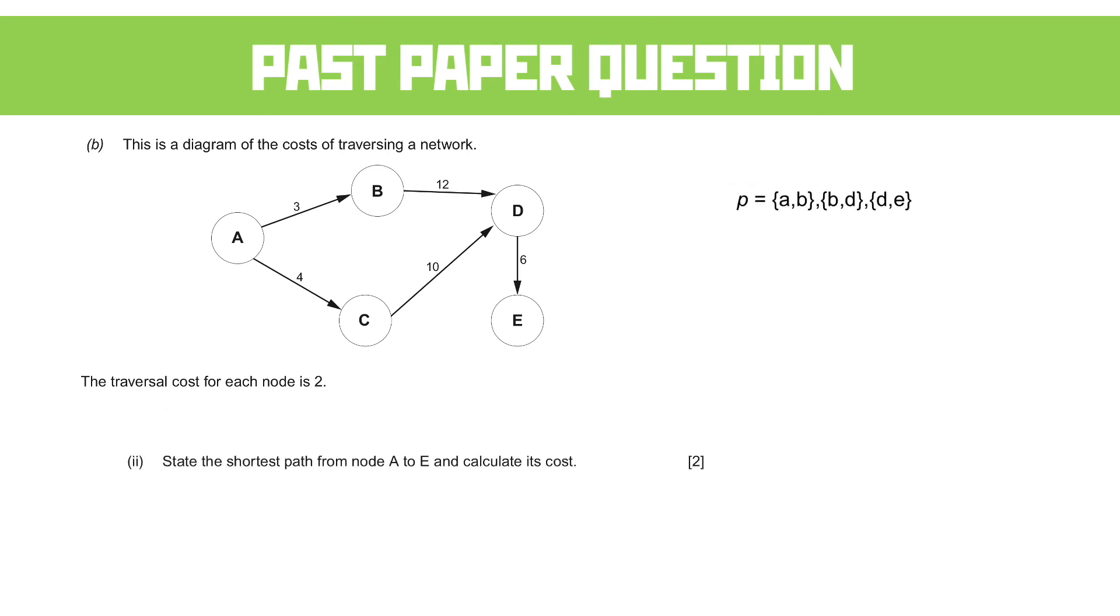What we can do is write down the potential path. We could do A, B, B to D, D to E, and that is 25. We could do A, C, C to D, and D to E, and that's 24. So we can see that Q is actually less than P, so path Q is the shortest. We're saying that A, C, C, D, and D, E is the shortest path.